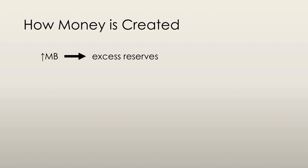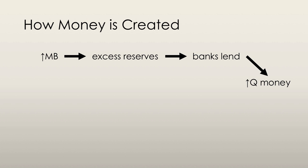When a central bank purchases securities from a bank, that chartered bank's deposits don't change, but the bank has excess reserves. Its excess reserves are its actual reserves minus its desired reserves. When a bank has excess reserves, it makes loans and creates deposits. When the entire banking system has excess reserves, total loans and deposits increase and the quantity of money increases.